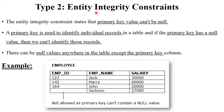The next type is entity integrity constraint. Entity integrity constraints work on the primary key value. As we discussed in the last session, a primary key is generally used to identify a unique row or unique record in your table. For example, in an employee table with employee ID, employee name, and salary columns, the employee ID is the primary key — a unique value used to identify each employee. However, if a row contains a null value in the employee ID column, you can't identify that employee. So a primary key cannot be null; it doesn't store any null value. This is called entity integrity constraint.